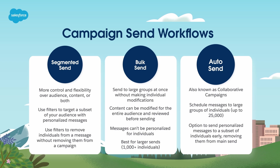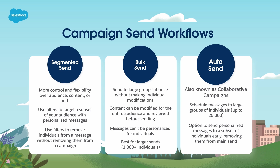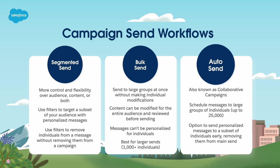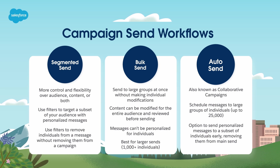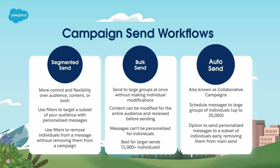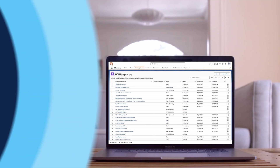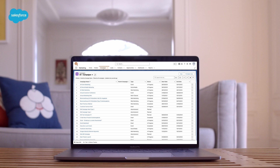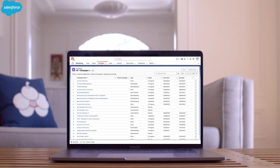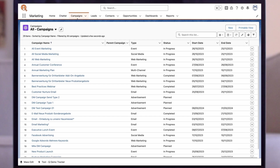Auto Send: use an auto send, also called collaborative campaigns, when you want to message large groups of individuals on a set date, but also want some individuals to receive personalized messages early. At the set date and time, all campaign members who haven't already been sent to and aren't part of a scheduled or bulk send will be sent to from the Auto Send campaign journey. Now let's see Campaign Send in action with a segmented send to a subset of our campaign members.